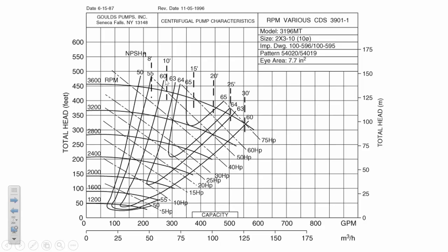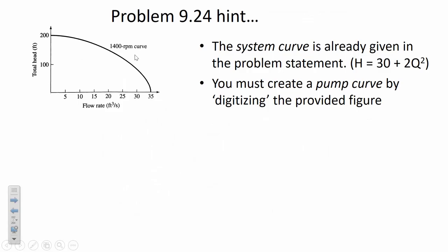The dashed lines on the manufacturer curve represent NPSH — Net Positive Suction Head — which gives an idea of the risk of cavitation inside that pump. Before discussing NPSH further, here's a hint for an unusual homework problem.